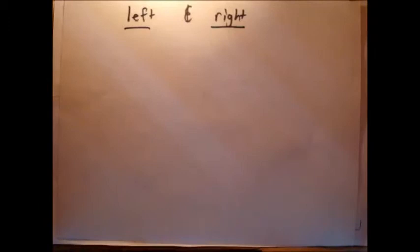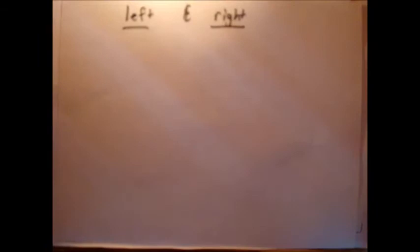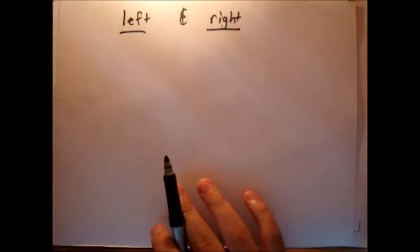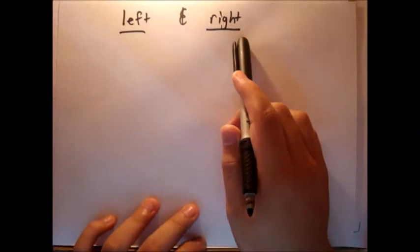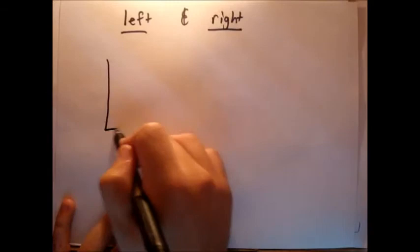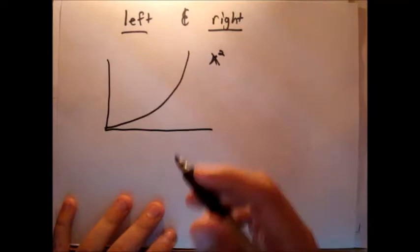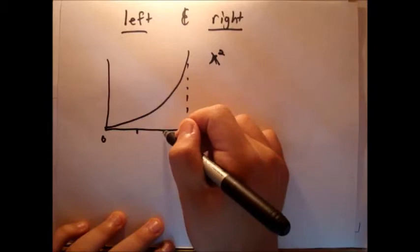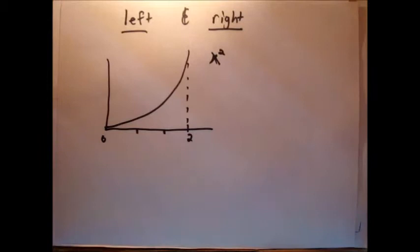Before we get into the limit, instead of getting an infinite amount of rectangles, let's first get a certain amount of rectangles. There's a left and right orientation. If we have a simple parabola — x squared — and we're interested in finding the area from zero to two, let's divide this into three rectangles with the same width.